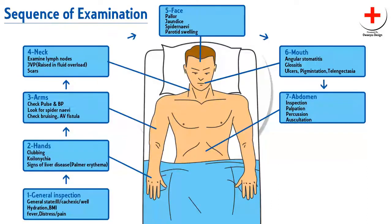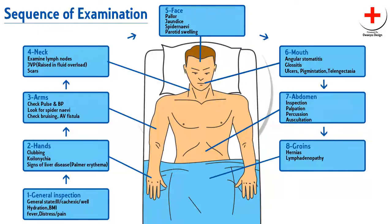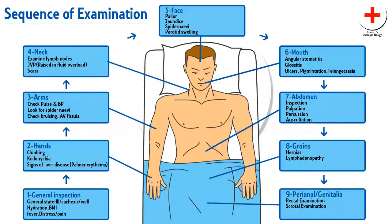We will examine the abdomen in detail in the next part of this video. In the groins, look whether there is any bulging that may suggest hernia. Check for lymphadenopathy. Then ask the patient about examining the genitalia and perianal area. Perform rectal and scrotal examinations, and check for ankle edema.